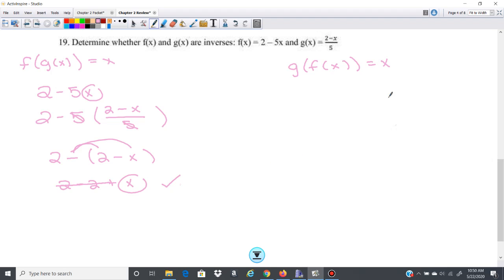Okay, so that works. Now let's try it over here. So g of x is 2 minus x over 5. We're going to put f of x in right there. So 2 minus, and then our f of x,